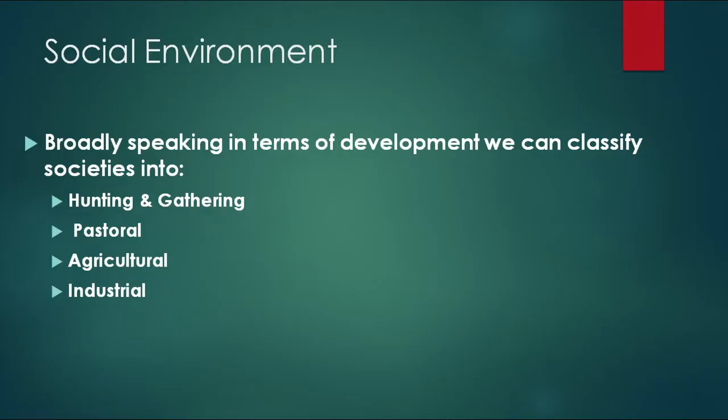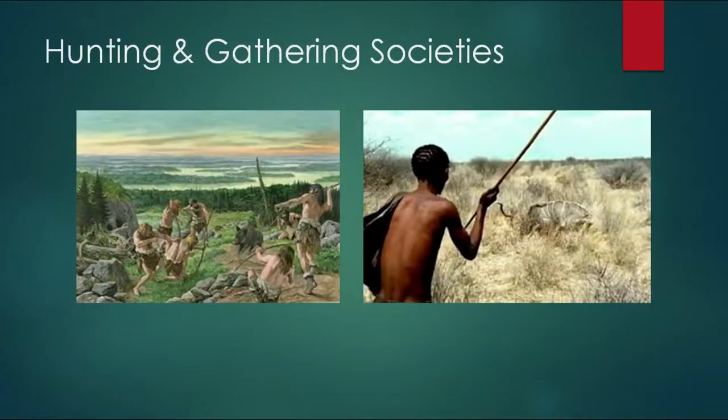As sociologists, in terms of development we classify societies into hunting and gathering societies, pastoral societies, and agricultural and industrial societies. We discuss these different kinds of societies because the interaction of man with the environment is influenced by the level of economic development of that society. A hunting and gathering society is at a lower level of development, based on hunting animals and gathering wild fruits, with a simple division of labor based on age and sex, and a subsistence economy.